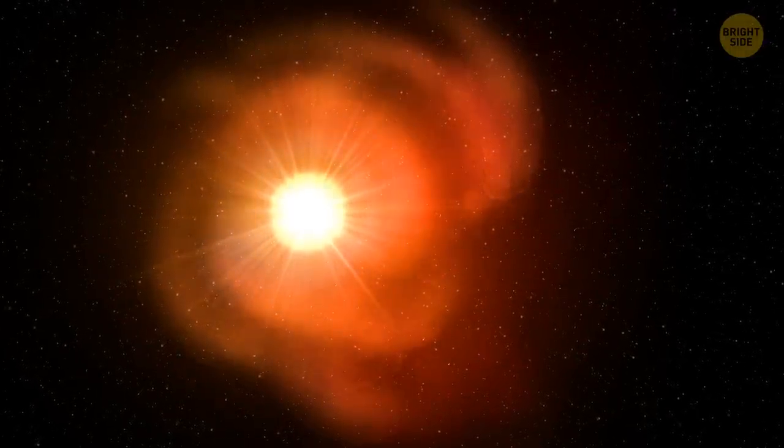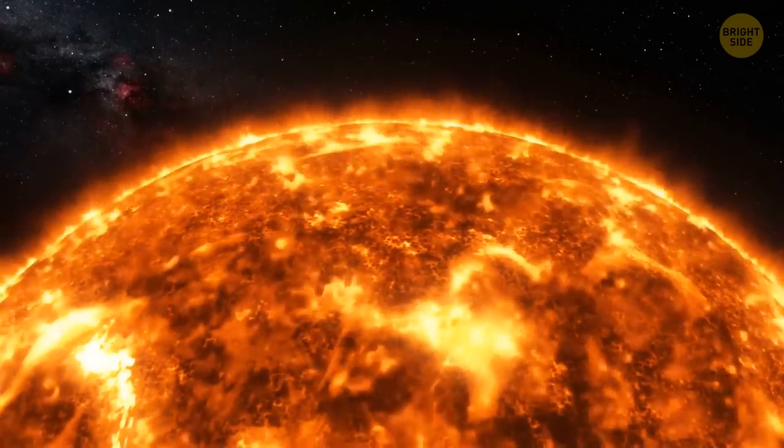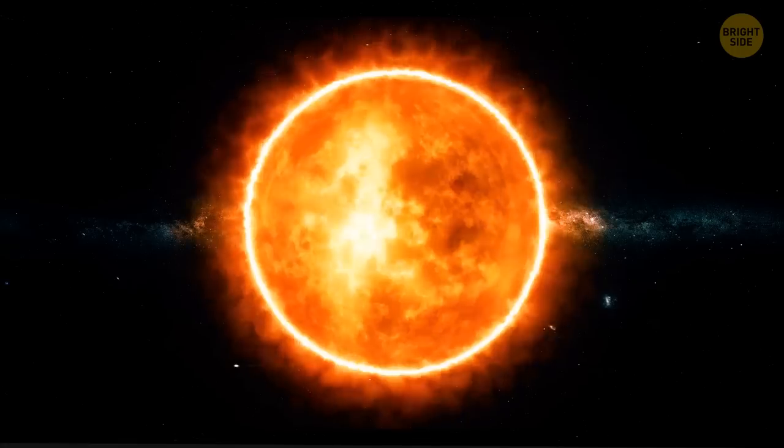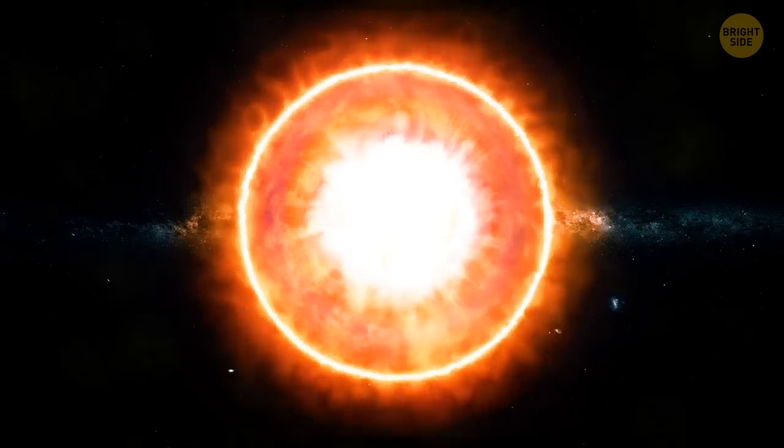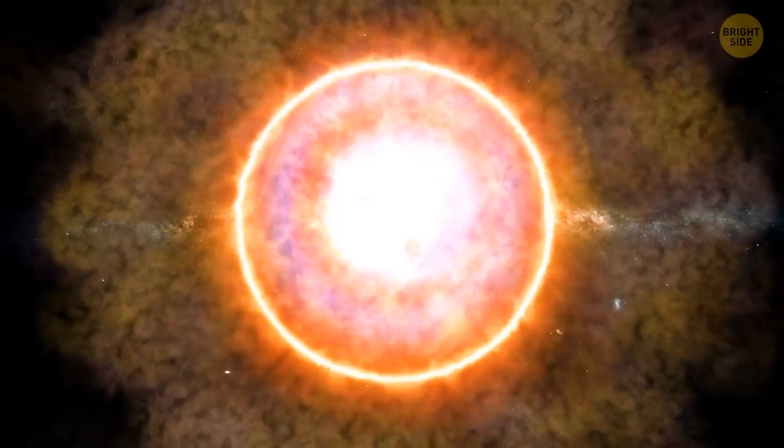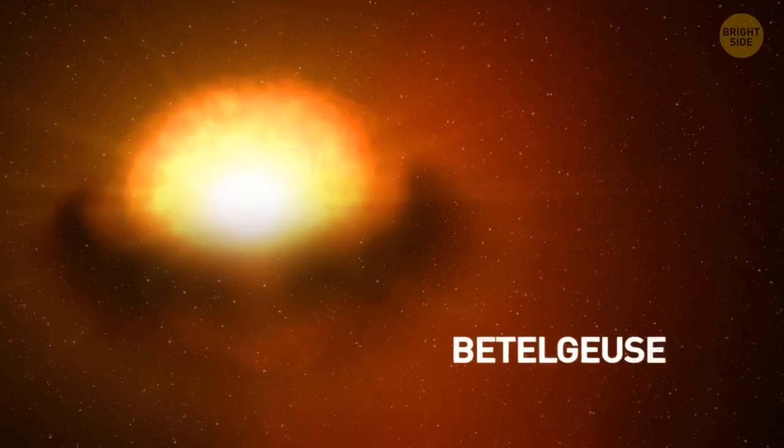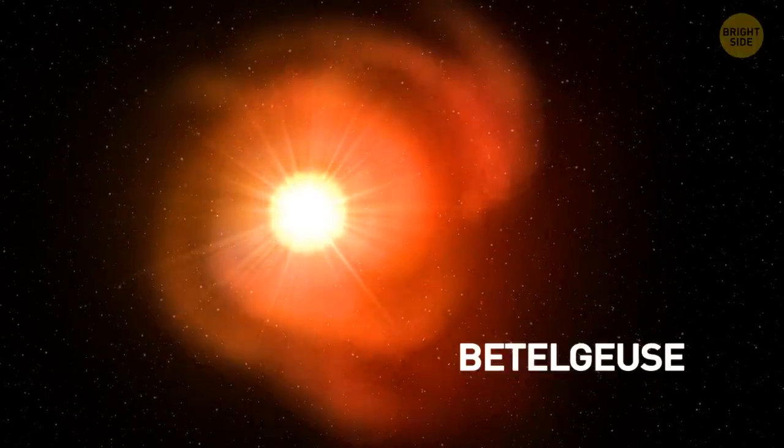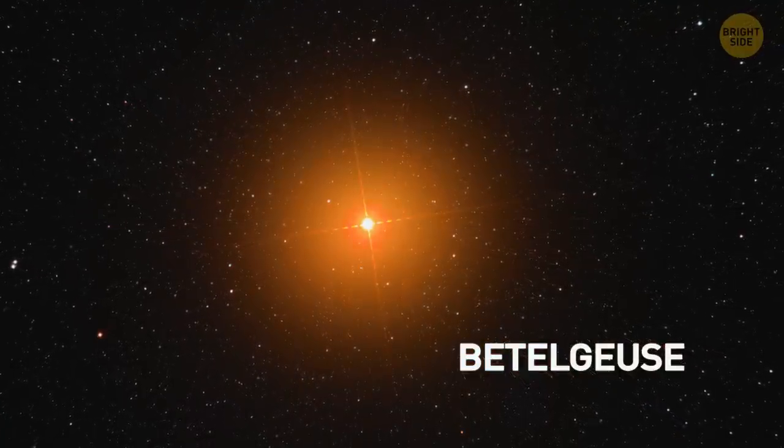This star emits most of its energy as infrared light, and it also indicates that its core is most probably still burning helium, and not something that would greatly increase the amount of heat, like carbon, for instance. Betelgeuse will still go supernova, but not for another 100,000 years. So, you can cross it off your supernova list for the time being. And as for how to correctly pronounce Betelgeuse, you can say it any way you like. There are as many different pronunciations out there as there are people who think they know how to pronounce it correctly.